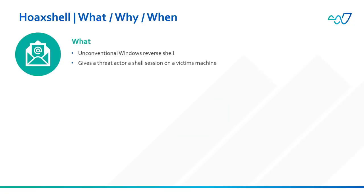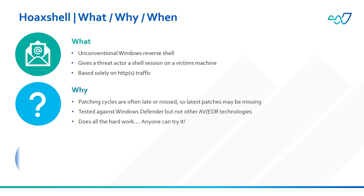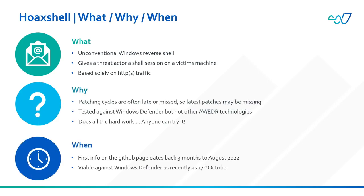HoaxShell is an unconventional Windows reverse shell — a reverse shell being a vulnerability that enables a threat actor to initiate a shell session on a victim's machine, from which they are then able to gain access and ultimately propagate from said victim's machine. HoaxShell has until recently been undetected by Windows Defender and possibly other AV solutions, as it is solely based on HTTPS traffic.